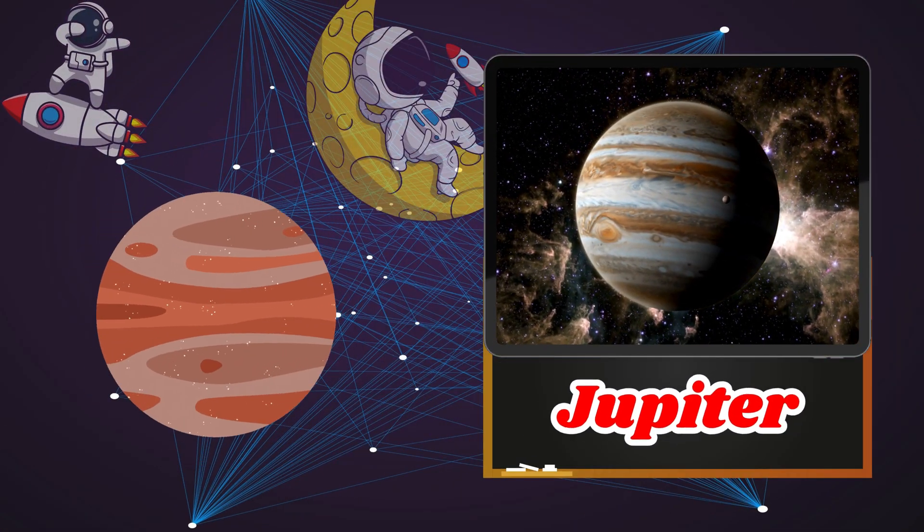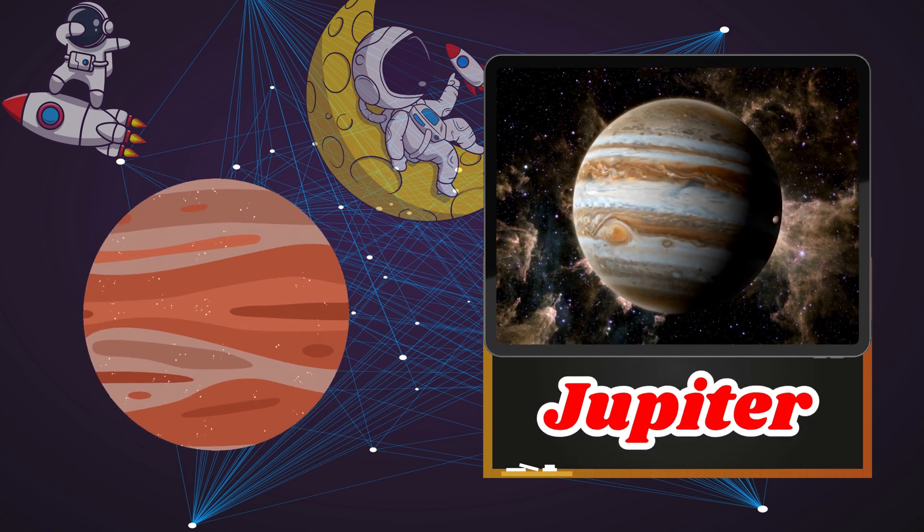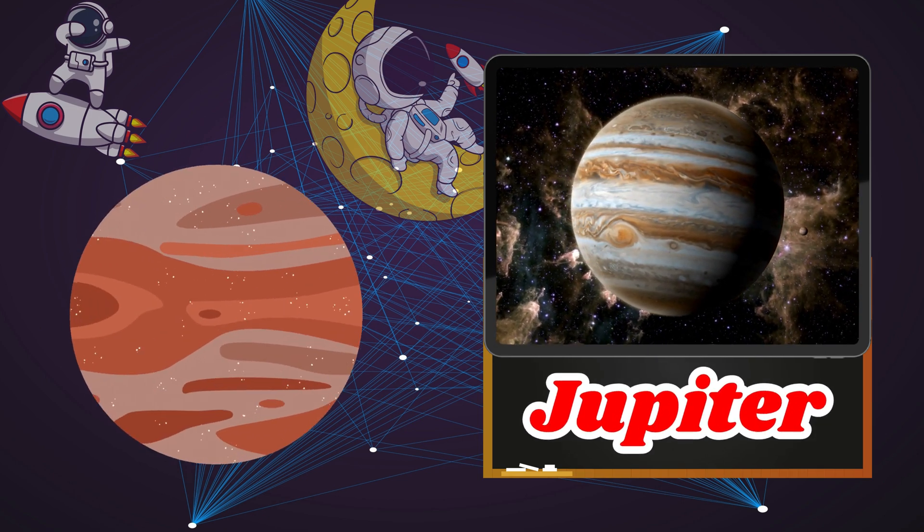Jupiter is the biggest planet. It has a big red spot which is a giant storm and many moons.